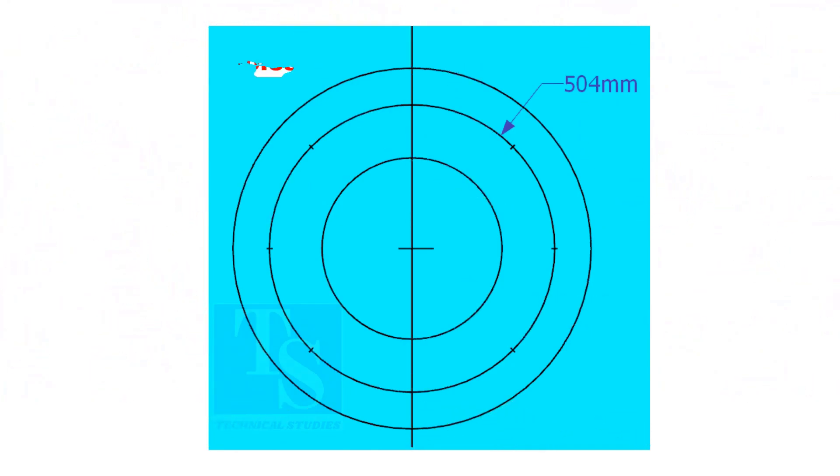Since the number of the holes is 8, divide the PCD into 8 equal parts. To divide the circle easily and accurately, let us find the cord length of the holes.